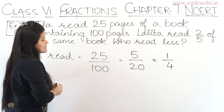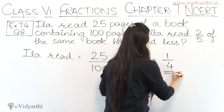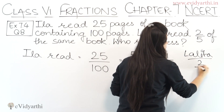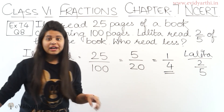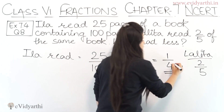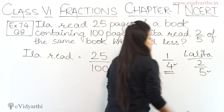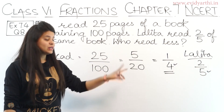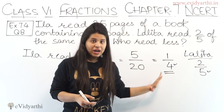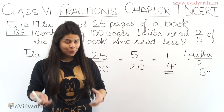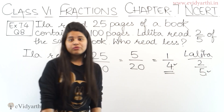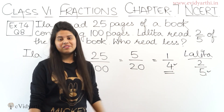Next, Lalitha's fraction is already given as 2 upon 5. Now if I compare these two fractions — 1 upon 4 and 2 upon 5 — to find which is less, I need to make their denominators equal and then compare. The denominators are 4 and 5, so the LCM will be 20 because 4 into 5 is 20.